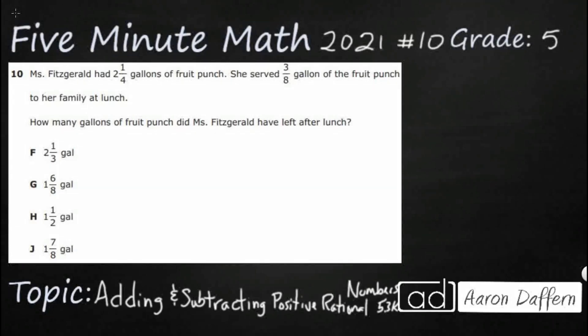Hello, and welcome to 5-Minute Math. Today we are looking at the 5th grade concept of adding and subtracting positive rational numbers. This is standard 5.3k in the great state of Texas, and we are using item number 10 off the 2021 released STAAR test.